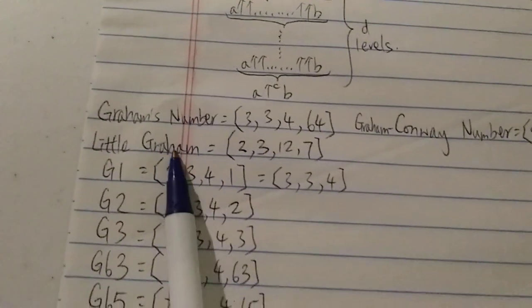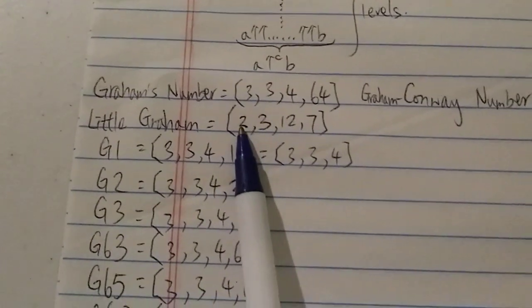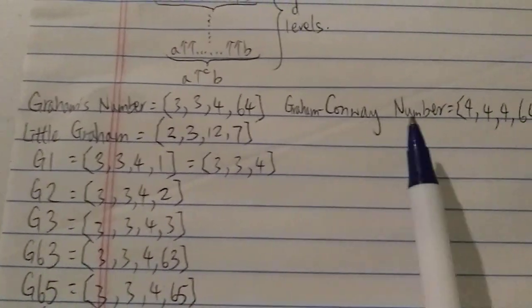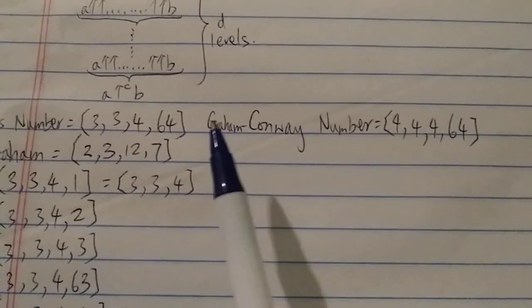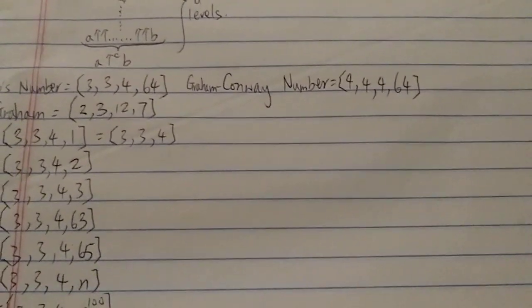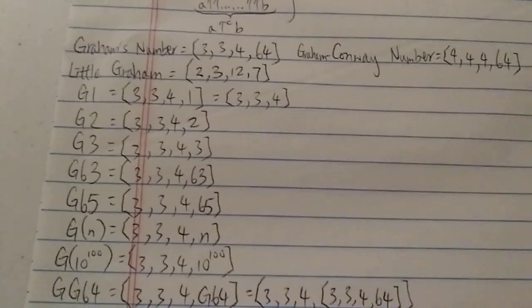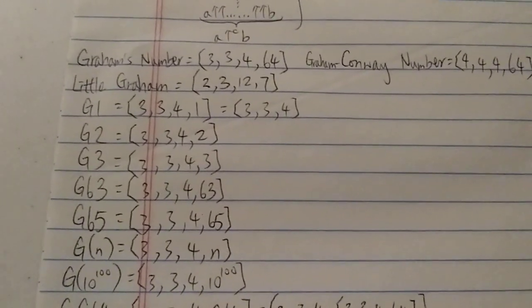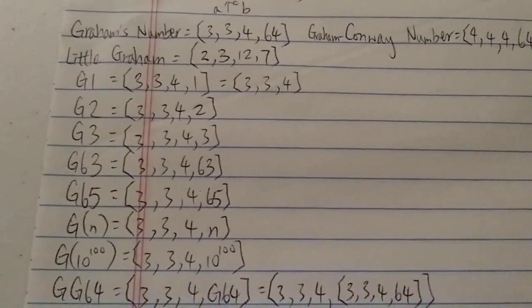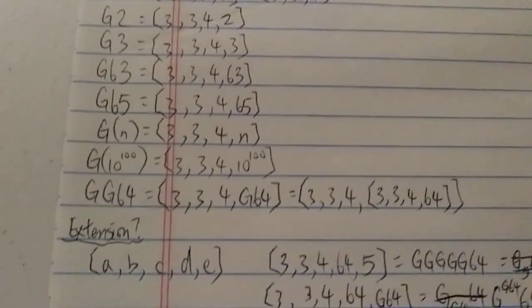Let's look at a few more. Little Graham — the original Graham's number — is [2, 3, 12, 7]. And the Graham-Conway number would be [4, 4, 4, 64]. So it's a very straightforward, precise, accurate, and quick way to represent Graham's number or any other big numbers related to the G sequence.